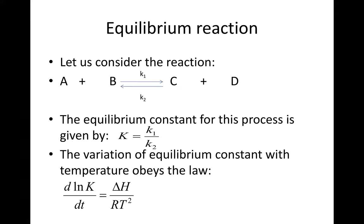The variation of equilibrium constant with temperature obeys the law d natural log of capital K over dT is equal to delta H over T squared. Let us call that equation 1.